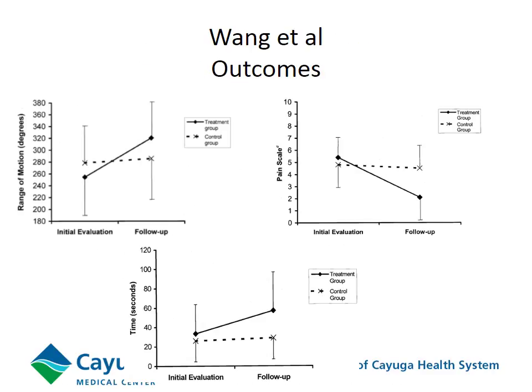Here are the outcomes. The treatment group generally did better as far as improved range of motion, decreased pain, and improved strength. However, this was a group that got treated versus a group that didn't get treated. So the good news is that something is better than nothing. Still, this is some evidence to suggest that classifying our patients improves outcomes, but it's not very strong.